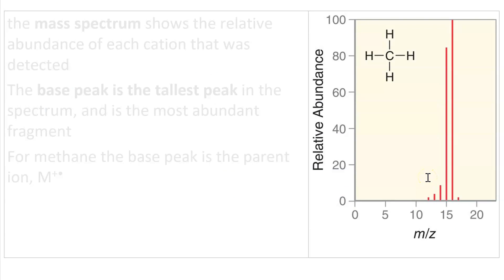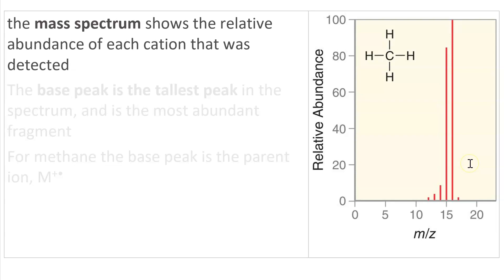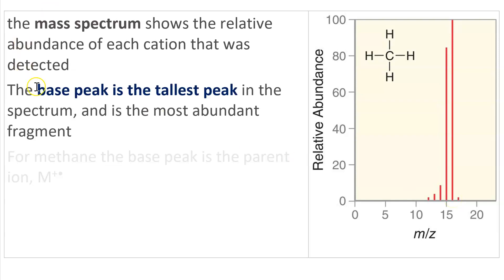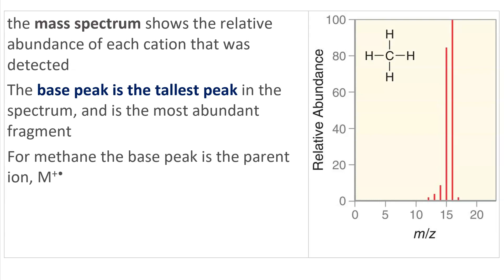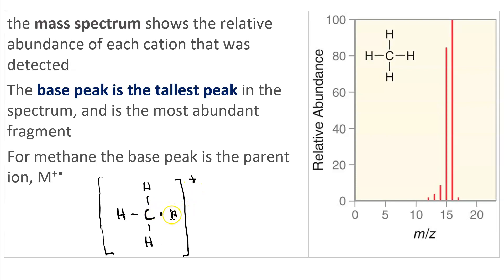Shown here is the mass spectrum of methane. This spectrum shows the relative abundance of each cation that was detected. For methane, the most abundant cation is at a mass to charge ratio of 16. The tallest peak in the spectrum corresponds to the most abundant fragment, and that's called the base peak — at M over Z equals 16. For methane, the base peak is the parent ion, which is the methane cation radical: a cation because it's missing one electron, and a radical because one of the CH bonds consists of a single electron instead of a pair.